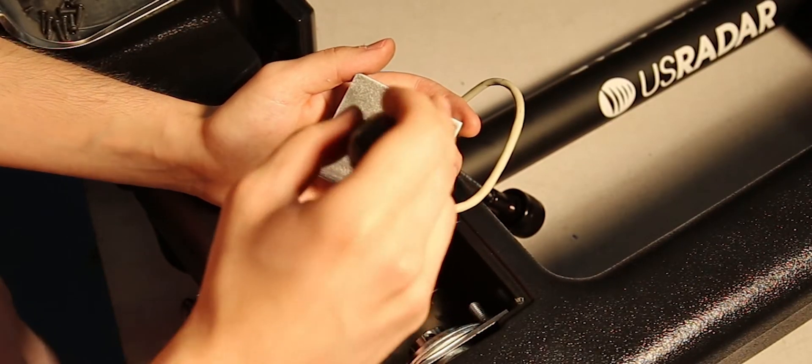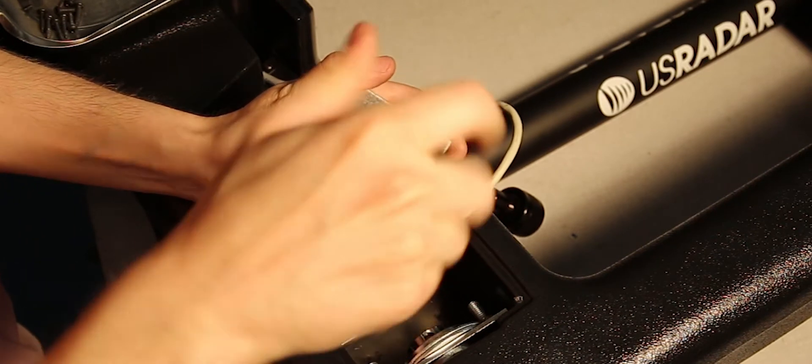With a number 1 Phillips screwdriver, remove the four screws fastening the encoder to the support plate.